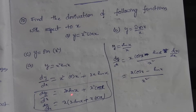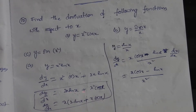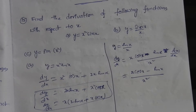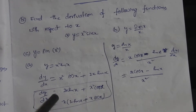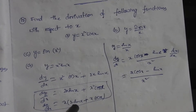For y is equal to x squared sin x, differentiation dy by dx: using the u into v (product rule) method, x squared differentiates to cos x, and x squared differentiates to 2x with sin x as it is. So dy by dx is equal to 2x sin x plus x squared cos x.